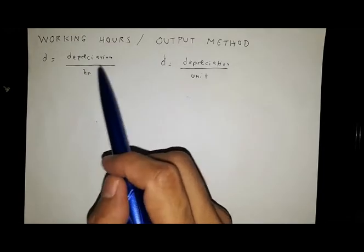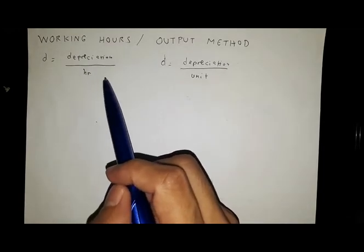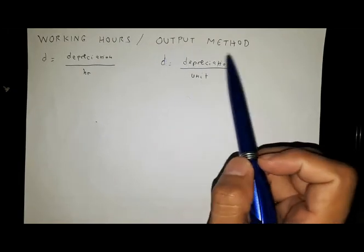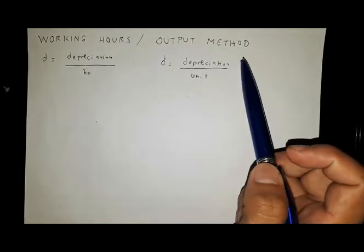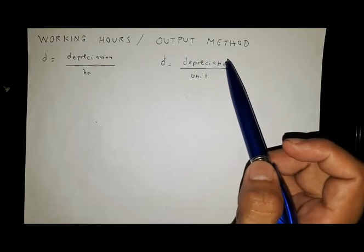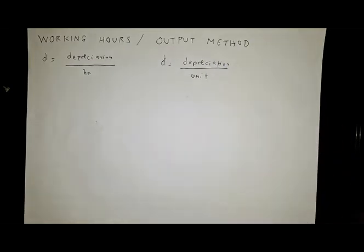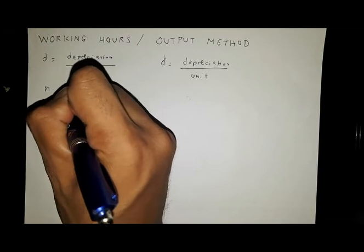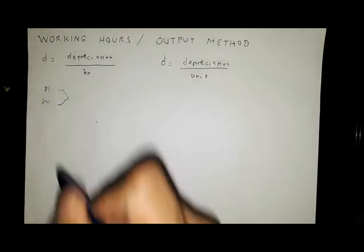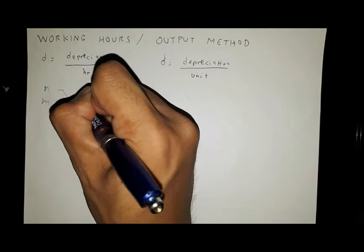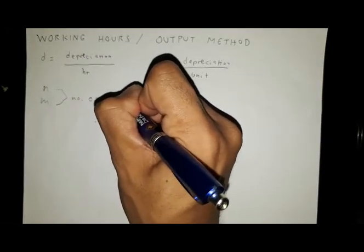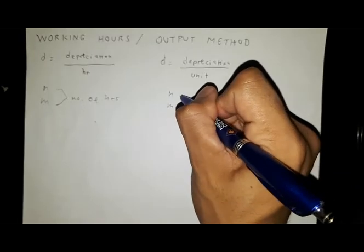The first one is concerned with the number of operating hours, and the second one, the output method, is concerned with the units produced or the output being produced by a working equipment. So here, both your n and m are concerned with the number of hours.